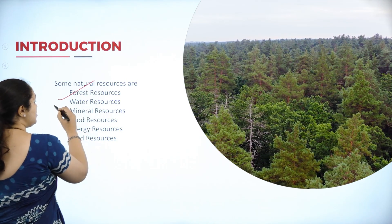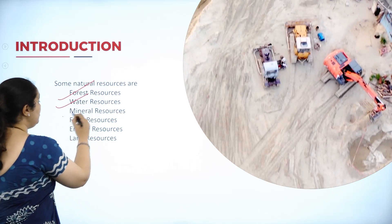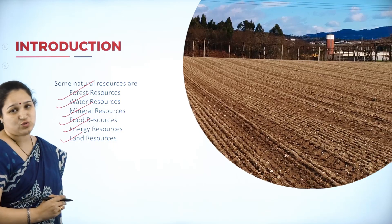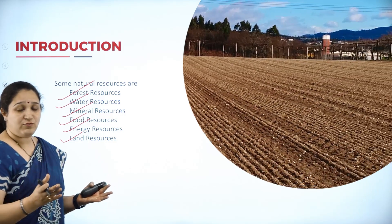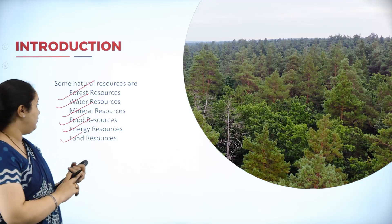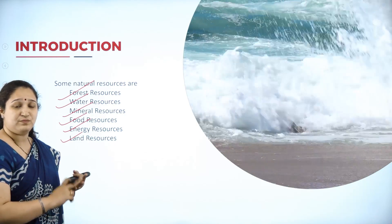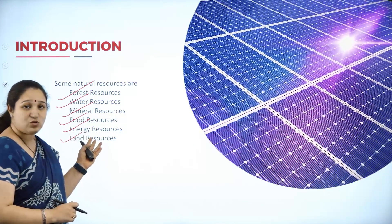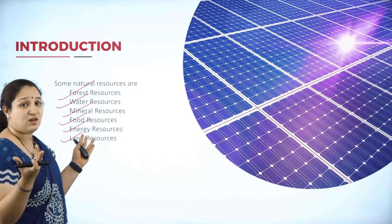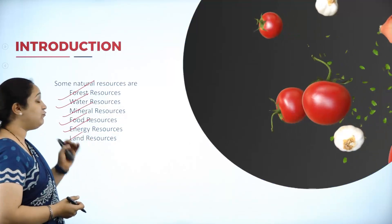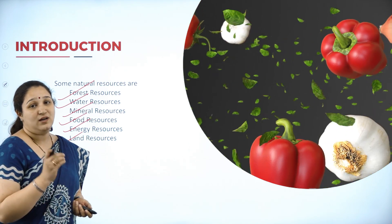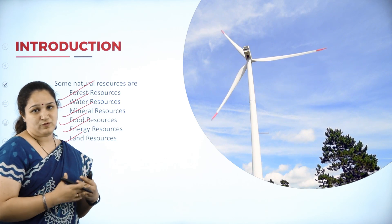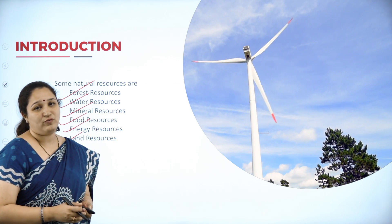The naturally occurring resources are: forest resources, water resources, mineral resources, food resources, energy resources, as well as land resources. All these are abundantly found and naturally occurring. We have forest, we have water around us, then we have minerals, we have soil — that is called land — and we have energy resources. Solar energy is very abundantly available. Then we have food resources, etc., which are naturally occurring resources.